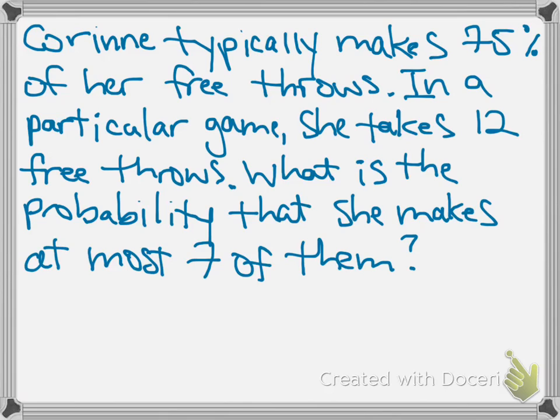What we need to do is pay close attention to what this question is asking. We're asked to find the probability that she makes at most seven of her shots. That means we need to calculate the probability she makes zero shots, the probability she makes one shot, two shots, and so on up to the probability she makes seven shots. Because we have several calculations to perform, I'm going to create a chart — which I've already done on the next page — to help organize our information.